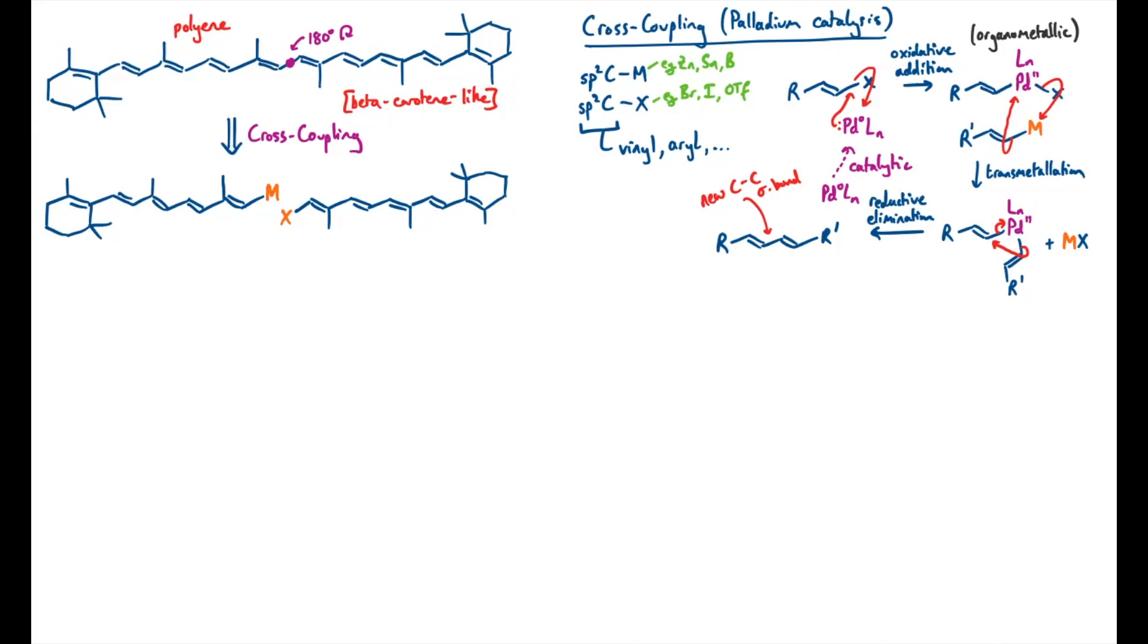We can disconnect both of these species back to a common precursor, which looks like this, with an alkyne at the end, and that's because both of the motifs we require can be made by a carboalumination reaction. Now, as this might be a less familiar disconnection, I'll just highlight what the mechanism is thought to be here.